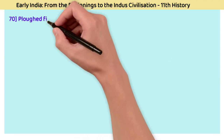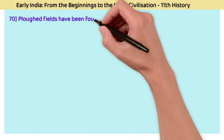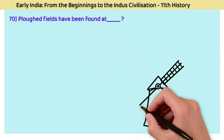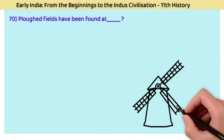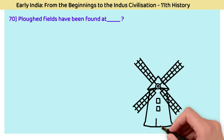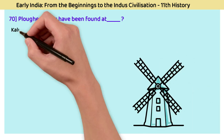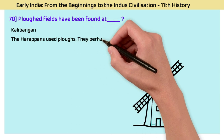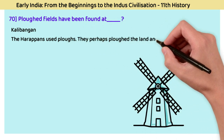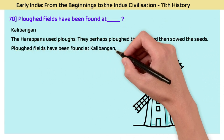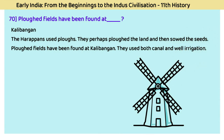Question 70: Where have plowed fields been found? Plowed fields have been found at Kalibangan. The Harappans used plows, and they perhaps plowed the land before sowing seeds. They also used canal and well irrigation.